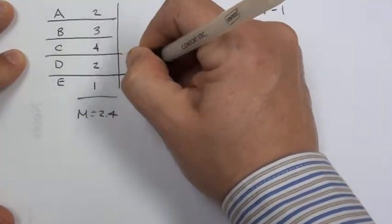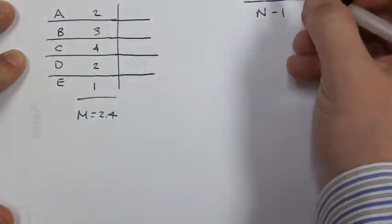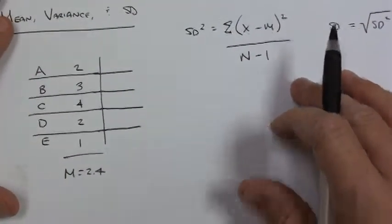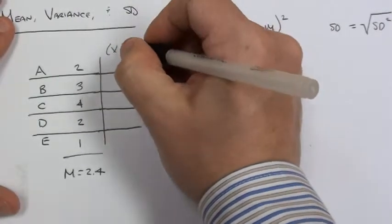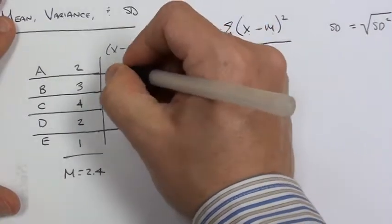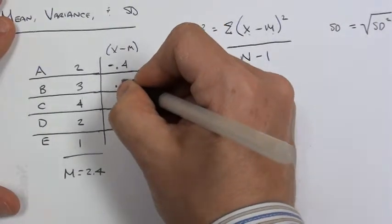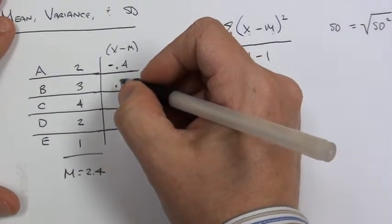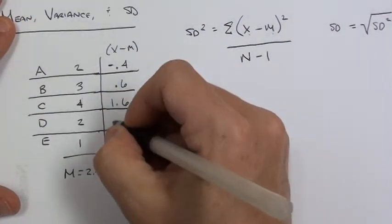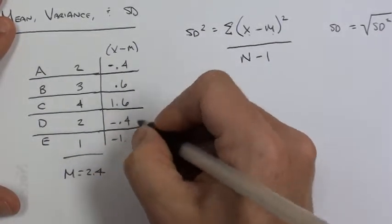Now here's where I'm going to start creating my columns, because I think this is the easiest way to keep track of what's going on in the formula. I need to subtract the mean from each individual score. So this is x minus m. 2 minus 2.4 is negative 0.4. 3 minus 2.4 is 0.6. 4 minus 2.4 is 1.6. 2 minus 2.4 is negative 0.4 as before. And 1 minus 2.4 is negative 1.4.